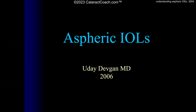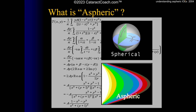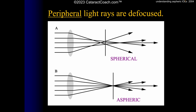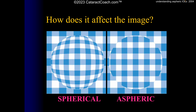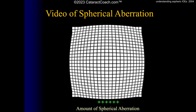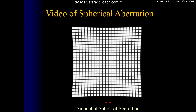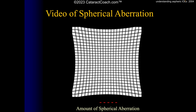This presentation about aspheric IOLs was first given in 2006, so about 17 years ago. What does aspheric mean? There are many mathematical ways of explaining this, but bottom line: in a spherical lens the peripheral light rays are defocused, whereas in an aspheric lens all light rays are focused at the same point. Think of it like an M.C. Escher drawing showing extreme positive spherical aberration — your reflection in a sphere — or a negative crater representing negative spherical aberration.